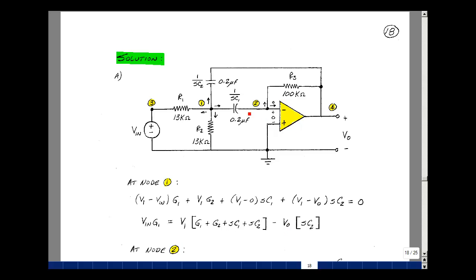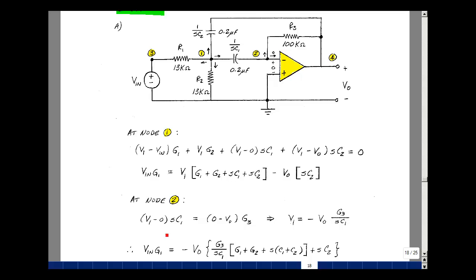My second node, I also let the currents leave the node, although I've got this one entering. This current that's entering is going to be V1 minus zero times SC1, and then the current that's leaving is zero, and then the current leaving here is going to be V2 minus V4, but V4 is Vout, divided by R3. And that's this equation right over here.